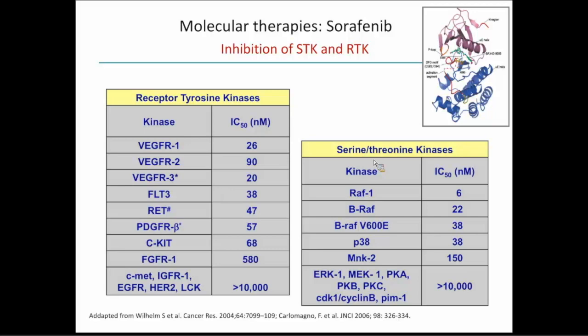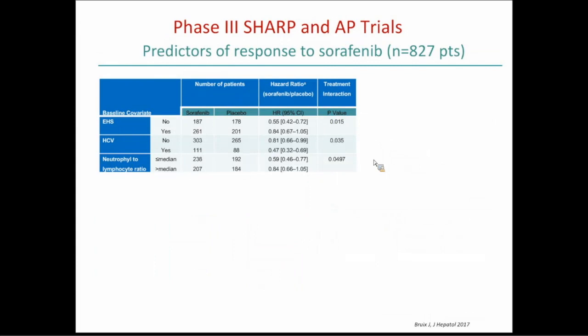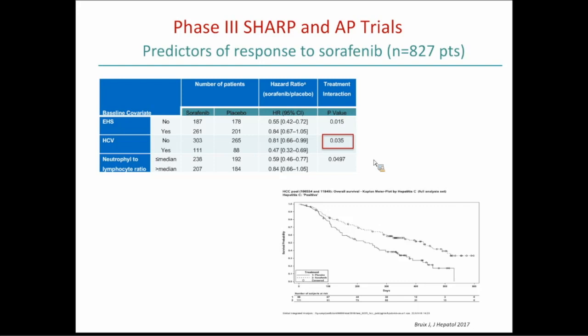Sorafenib is a well-known multikinase inhibitor — a dirty molecule blocking 40 kinases with IC50s at the nanomolar level. The seminal 2008 trial still establishes it as the standard of care for frontline, only challenged by lenvatinib. No drug has been shown superior to sorafenib in frontline so far. A meta-analysis of the two phase 3 trials — SHARP and Asia-Pacific, 827 patients — shows patients with hepatitis B virus infection respond significantly better to sorafenib, with a median survival of around 14 months in frontline.